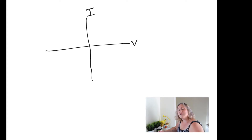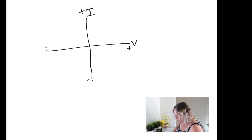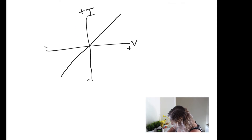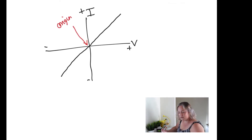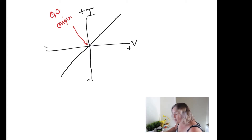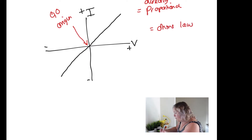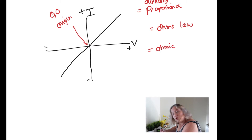These graphs are often called IV graphs or IV characteristics. They have both a positive side and a negative side because current and potential difference can be positive or negative. A straight line graph that goes through the origin — where zero-zero would be — means the relationship is directly proportional. Any graph that is a straight line like this is directly proportional, and this kind of graph follows Ohm's law, making it an Ohmic conductor.